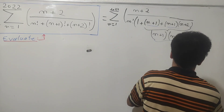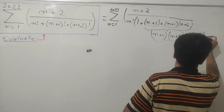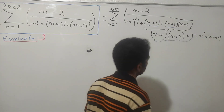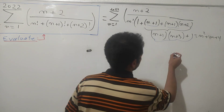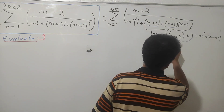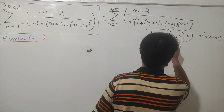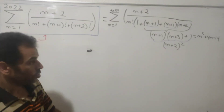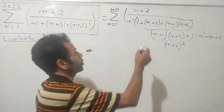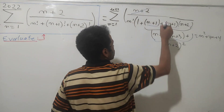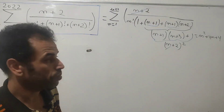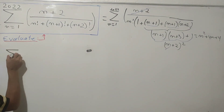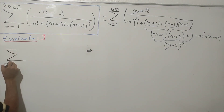Expanding the bracket gives n squared plus 4n plus 4, which is (n+2) squared. So one factor of (n+2) in the denominator cancels with the (n+2) in the numerator, leaving us with a new simplified sum.